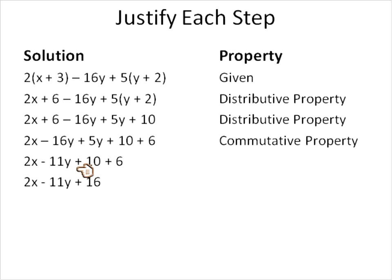Then in the next step, the second to last one here, we've added negative 16y plus 5y to get negative 11y. So we'll just call that addition because that's all we've done really. We just added these two terms. And then in the last step, we add 10 plus 6 to get 16. So we'll just call that one addition again. So that's the justification using our properties that we've learned for each step of solving this expression.